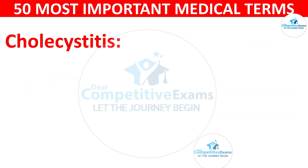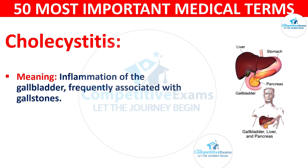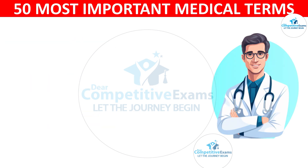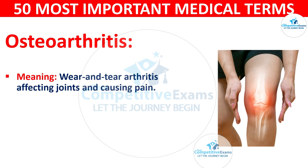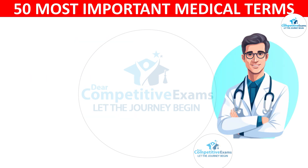Cholecystitis: meaning inflammation of the gallbladder, frequently associated with gallstones. It is inflammation of the gallbladder often due to gallstones. Osteoarthritis: meaning wear-and-tear arthritis affecting joints and causing pain. It is a degenerative joint disease that results in pain and stiffness.